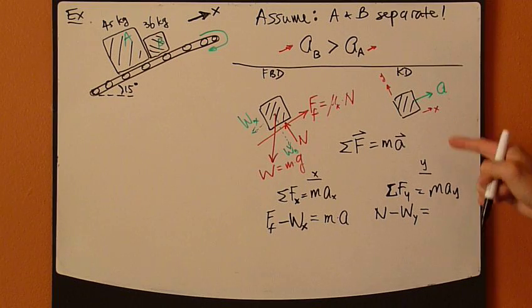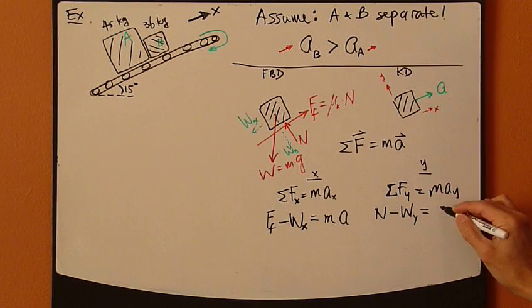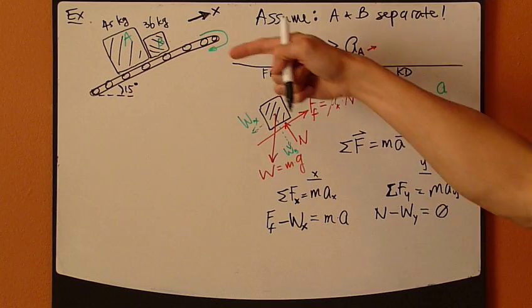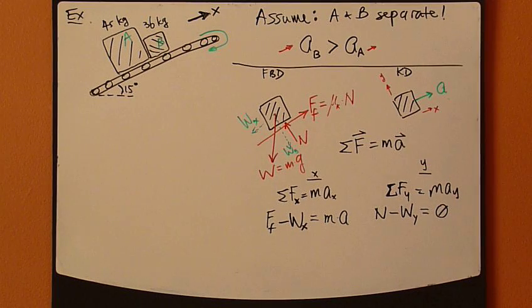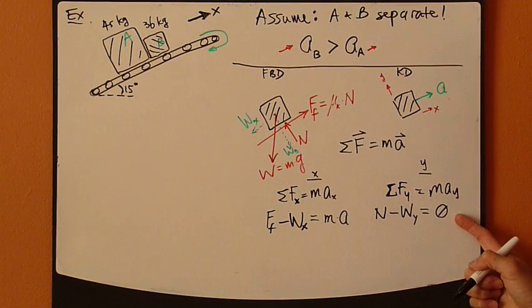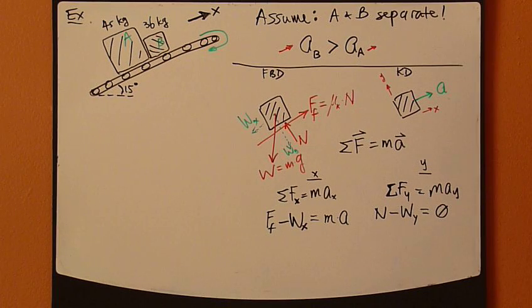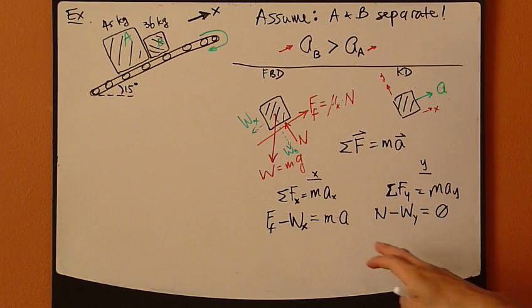Right-hand side, since there's no acceleration in the y-direction, it's not firing off the conveyor belt, so right-hand side is zero. That's all. So now we can combine these three equations together.